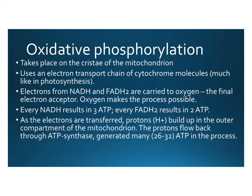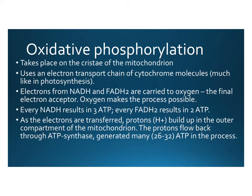The next step is the part that uses oxygen — called oxidative phosphorylation, with the electron transport chain as part of it. This takes place on the cristae of the mitochondria, the inner membrane, using cytochrome molecules. This process looks a lot like the light reaction of photosynthesis. Electrons from NADH and FADH2 are carried to oxygen, which is their final electron acceptor. Without oxygen to accept the electrons, the whole chain would stop, because electrons have to go somewhere for more to move through. For every NADH, we get 3 ATP; for every FADH2, we get 2 ATP.